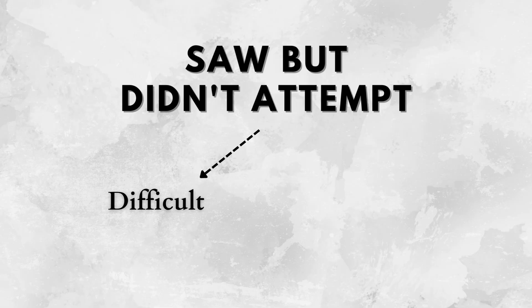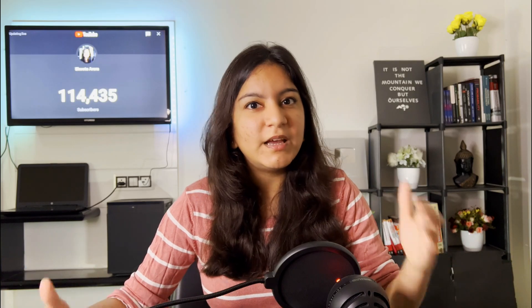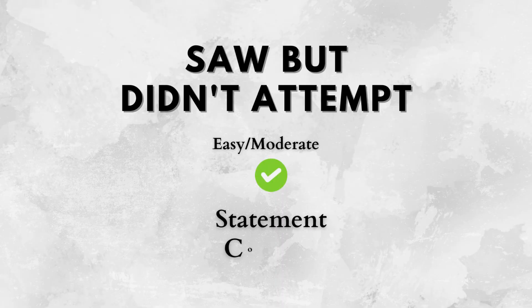Now for questions that you saw but did not attempt: these can be bifurcated into two parts — very difficult questions, or easy/moderate questions. After every mock you get an analysis key showing the difficulty level. If it was a difficult question and you did not attempt it, that's fine — in the actual exam you would skip difficult questions anyway. CAT is all about picking the right questions. But if it was an easy or moderate question and you still did not attempt it, then there is a problem. Check what mistake you made from these three: you did not understand the statement, or you understood it but didn't know which concept or formula to use, or you understood that but could not arrive at the right answer.